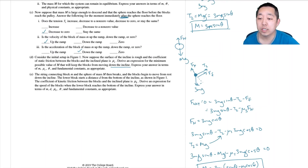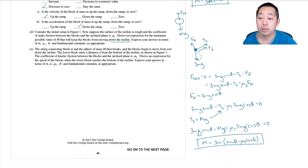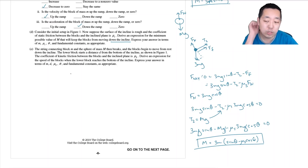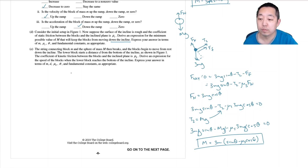Now the string connecting block little m and sphere M breaks, and the blocks begin to move from rest down the incline. The lower block starts at a distance d from the bottom of the incline. The coefficient of kinetic friction is mu_k. Derive an expression for the speed of the blocks when the lower block reaches the bottom. There are two ways to do this: kinematics or energy.